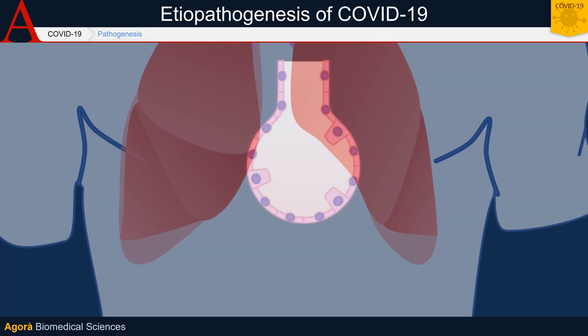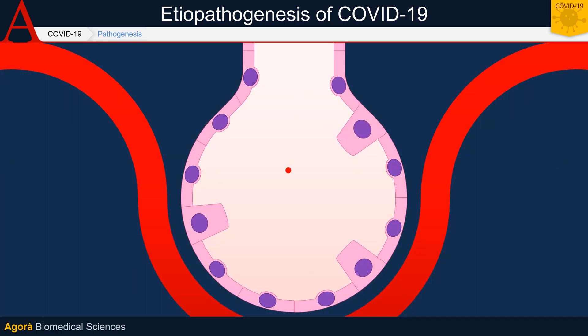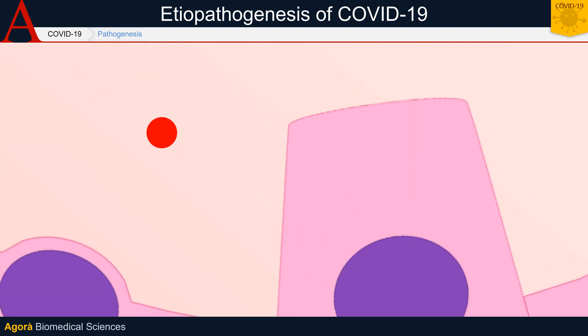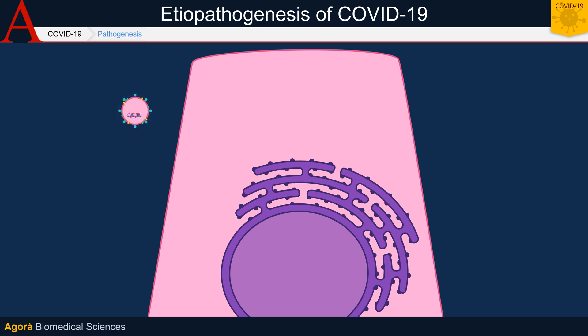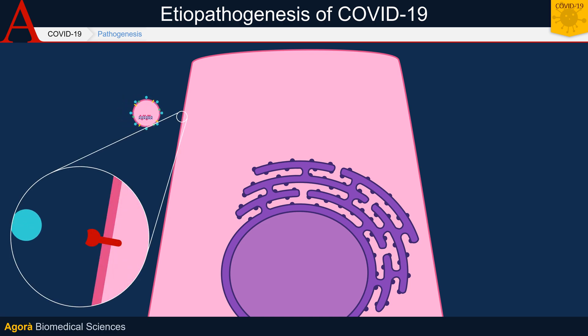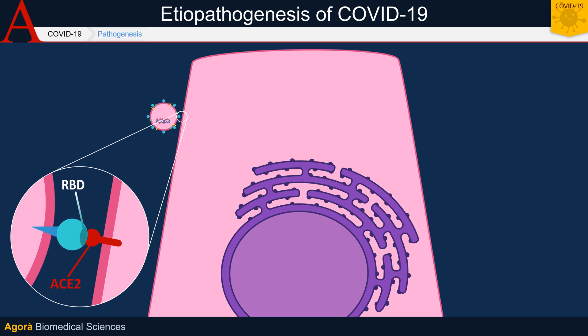The preferred route of entry for the virus is respiratory, with upper airway colonization. But the virus can spread even further down into the lungs. At this level, it binds to the host cell through the interaction between the ACE2 enzyme on human cells, which acts as a receptor for the virus, and the region of the S-protein called RBD, or receptor binding domain.